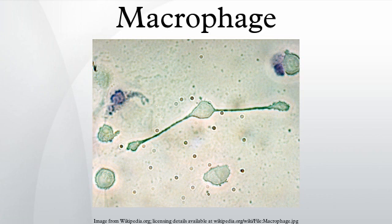However, some bacteria, such as Mycobacterium tuberculosis, have become resistant to these methods of digestion. Typhoidal Salmonella are known to induce their own phagocytosis by host macrophages in vivo, and inhibit digestion by lysosomal action, thereby using macrophages to replicate and cause macrophage apoptosis. Macrophages can digest more than 100 bacteria before they finally die due to their own digestive compounds.